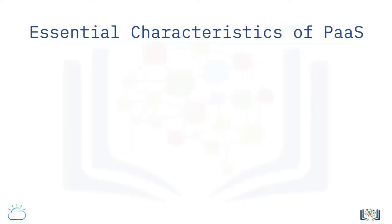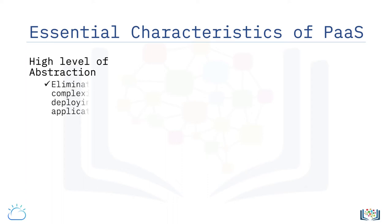Let's look at some essential characteristics of Platform-as-a-Service, or PaaS. PaaS clouds are distinguished by the high level of abstraction they provide to the users, eliminating the complexity of deploying applications, configuring infrastructure, and provisioning and configuring supporting technologies, like load balancers and databases.